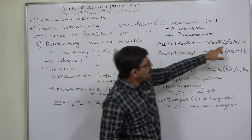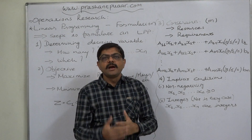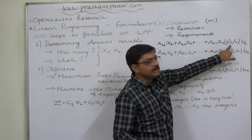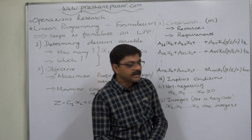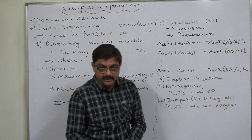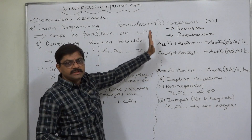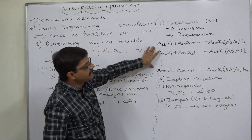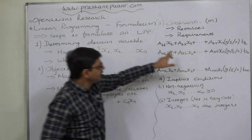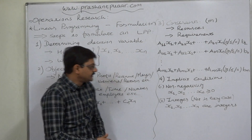A constraint can be an inequality with a greater-than-or-equal-to sign, meaning a minimum requirement must be satisfied; or a less-than-or-equal-to sign, meaning at most this much resource is available; or it can be an equality in some cases. Based on the number of resources and requirements, the number of constraints is determined. Since we assumed m constraints, there must be m inequalities or equalities.